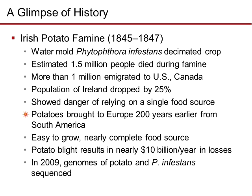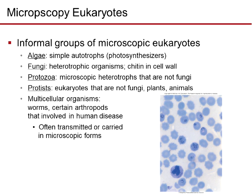Potatoes were brought to Europe 200 years earlier from South America, were easy to grow, and were nearly a complete food source. But the potato blight still results in nearly $10 billion a year in losses — that figure is from 2009. The genomes of potato and Phytophthora infestans were sequenced in order to try to prevent that kind of destruction from happening again.